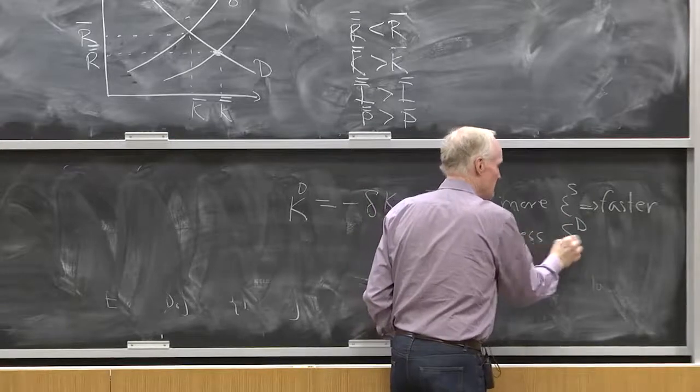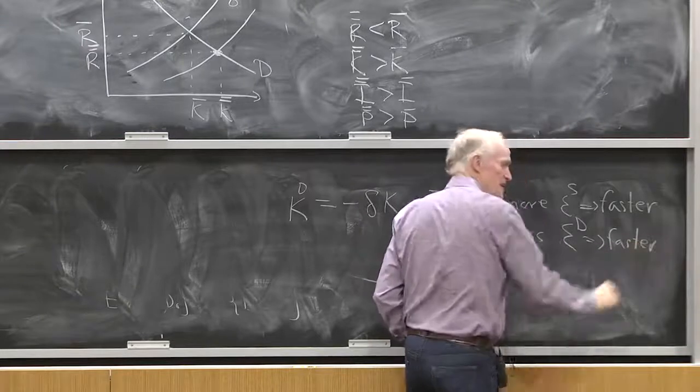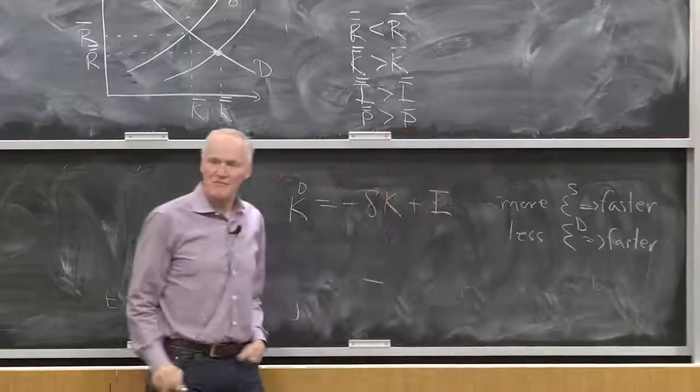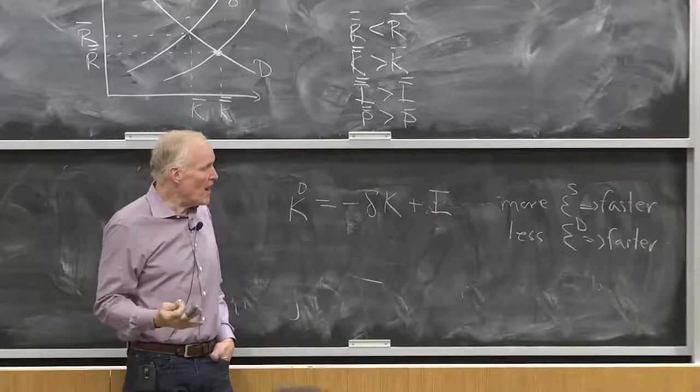And less elastic demand is going to mean faster. Should have guessed that even without thinking because if more elastic supply, well, it doesn't always go that way. But that's probably a good guess. But why?